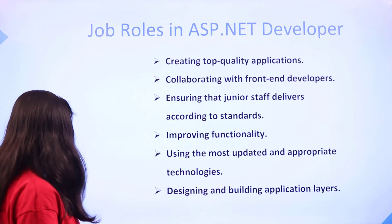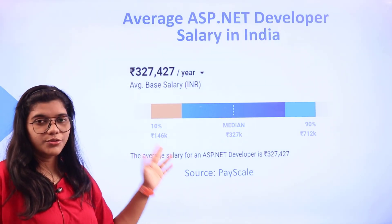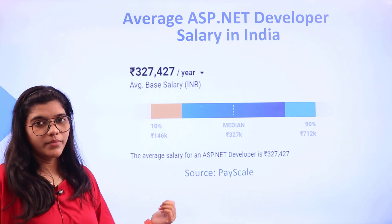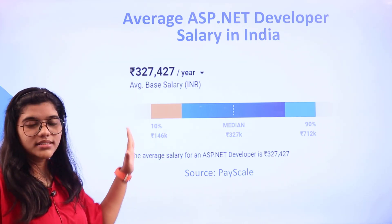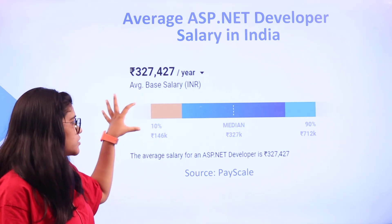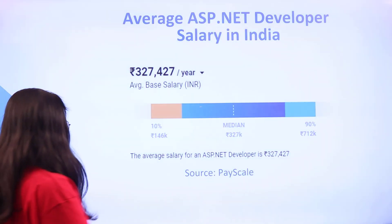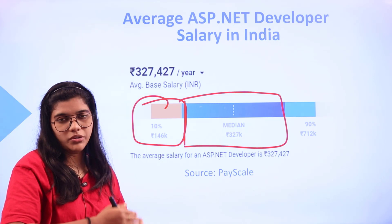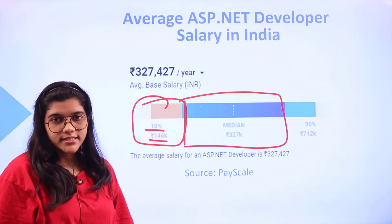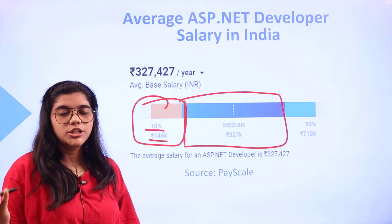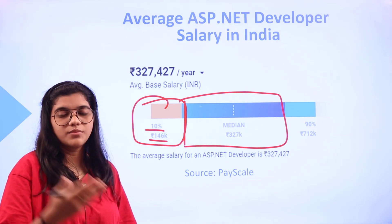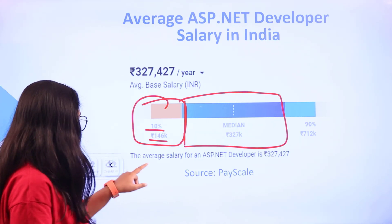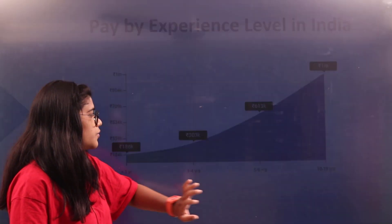Regarding salaries in India, from entry level to senior level — data sourced from PayScale — the entry level (10th percentile) starts at around ₹146,000, the median level is around ₹300,000, and the senior level (90th percentile) rises up to ₹700,000. On an average basis, you will be getting around ₹327,000 respectively.